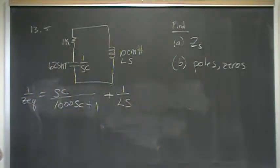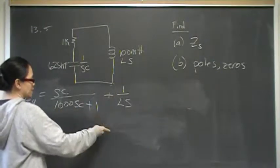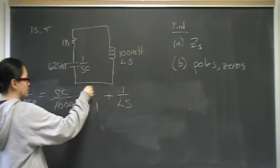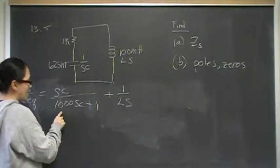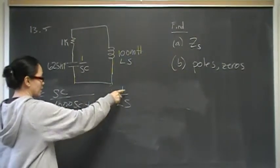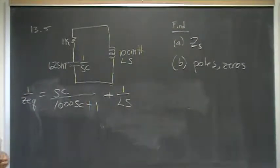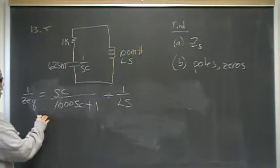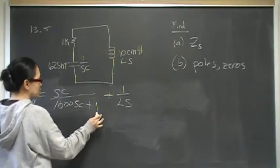Now, we're going to find common denominators and combine everything into one fraction. 1,000 Sc plus 1 is missing Ls, so I'm going to multiply top and bottom by Ls. And then this one is missing 1,000 Sc plus 1, so I'm going to multiply that top and bottom by 1,000 Sc plus 1. And then in the bottom, the new denominator will be 1,000 Sc plus 1 times Ls.